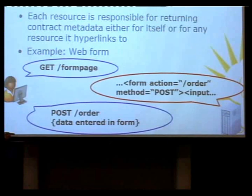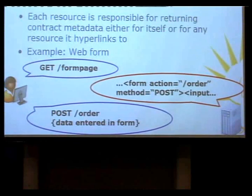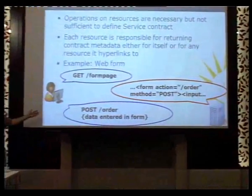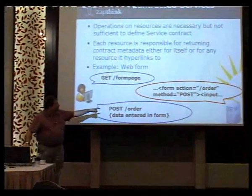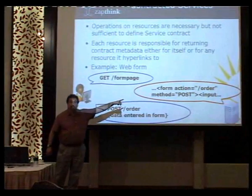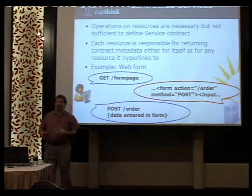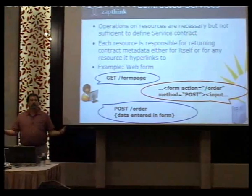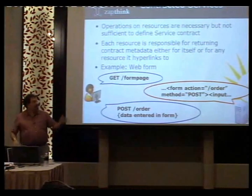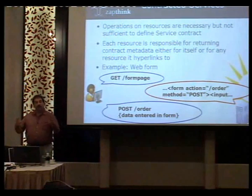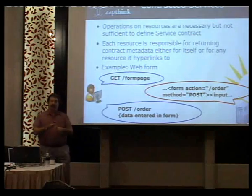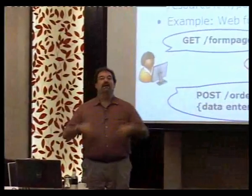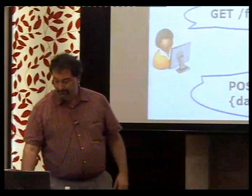If they want to submit the form, they're going to POST to that URI and the POST data will contain the information they put into the form. What constrains that? The form itself. So where is the contract? It's in the operations, it's in the hyperlinks, and it's in the representation that constrains the next thing the client can do.